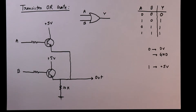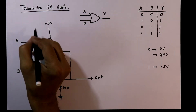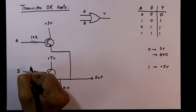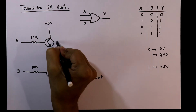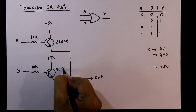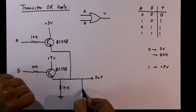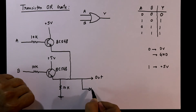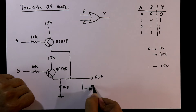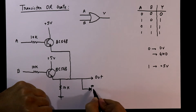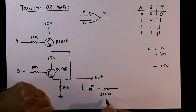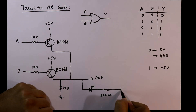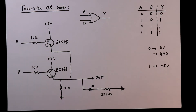Now we will see the practical circuit. For the practical circuit we will use 10K ohms for the base resistor and BC548 as the transistor. To see the output we will connect one LED, and the negative pin of the LED will be connected to a current limiting resistor of 220 ohms, which is then connected to the ground.